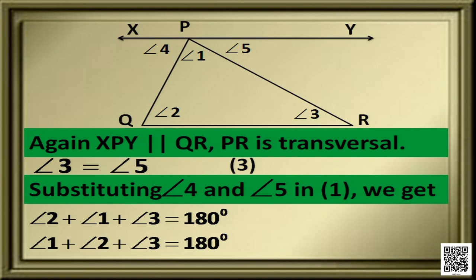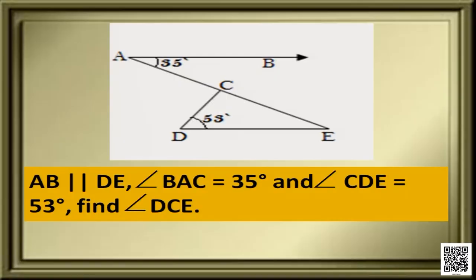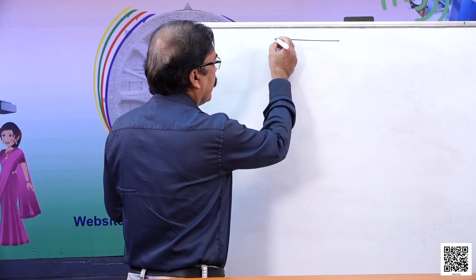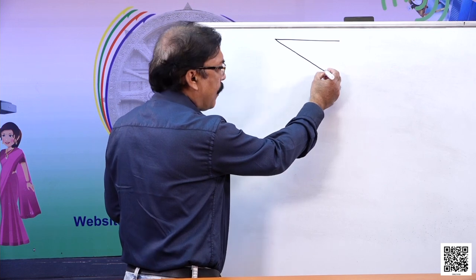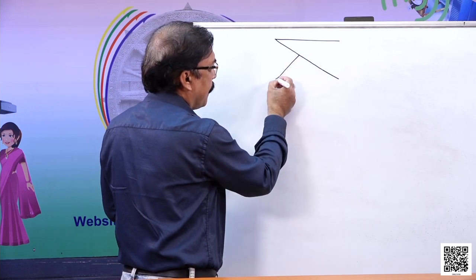Now let us solve some problems using this. Here is a figure where AB is parallel to DE, angle BAC is equal to 35 degrees, and angle CDE is equal to 53 degrees. Find the measure of angle DCE.